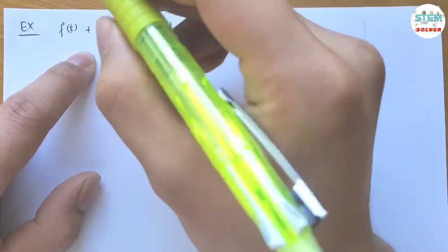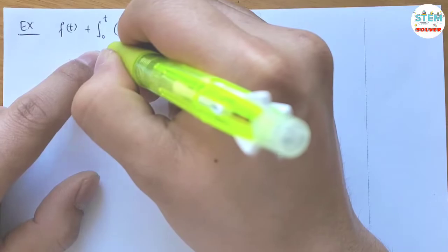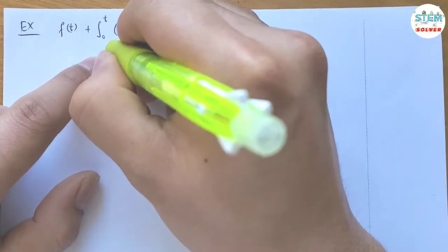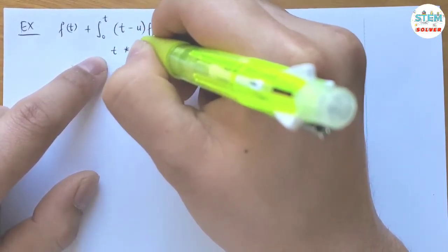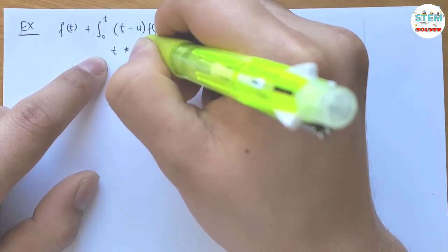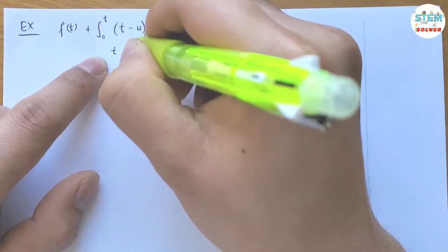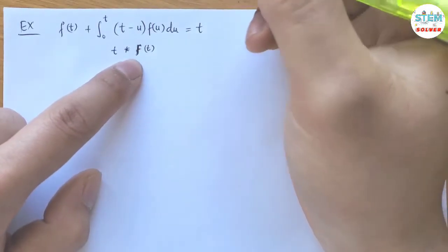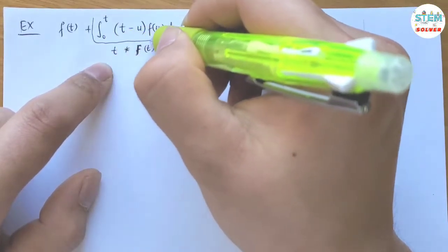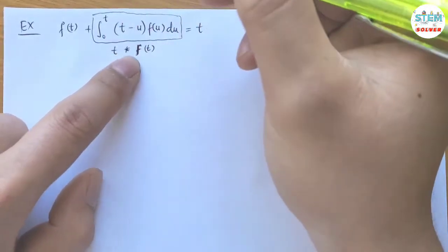the integral can be written as this one using the convolution, so we have t convoluted with f(t). So this is small f(t), and this whole thing here becomes this.